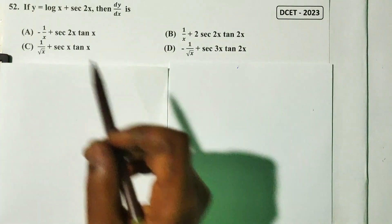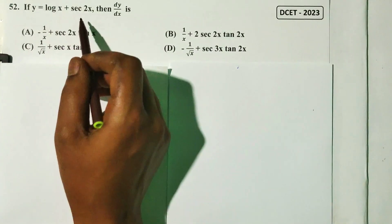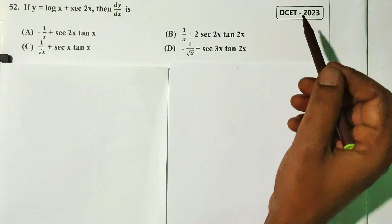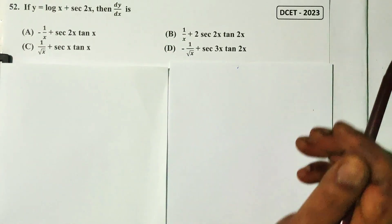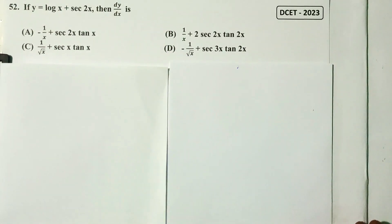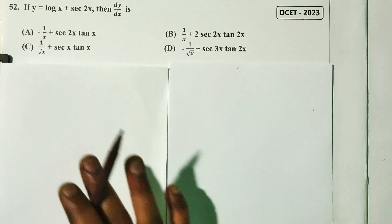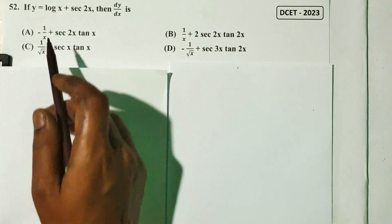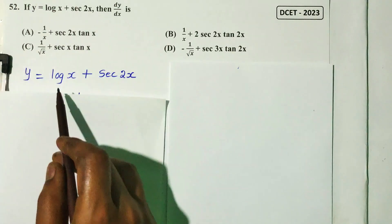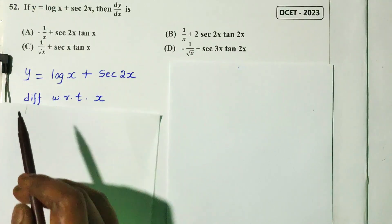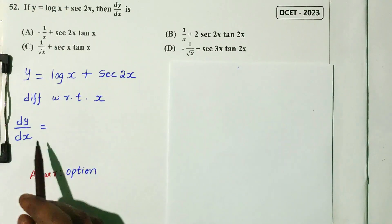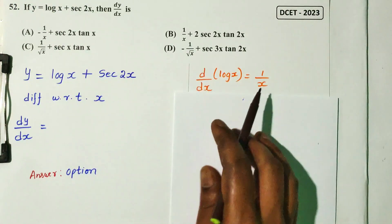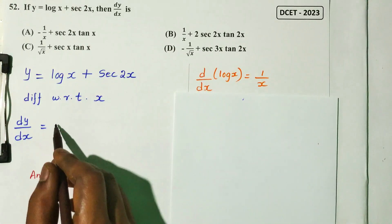Question number 52. If y equals log x plus secant 2x, then dy/dx is — DCT 2023 question. Simply differentiate: dy/dx of log x gives 1/x by direct formula.